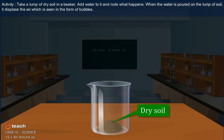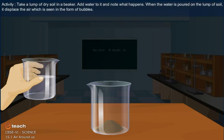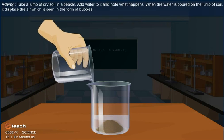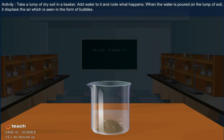Take a lump of dry soil in a beaker. Add water to it and note what happens. When the water is poured on the lump of soil, it displaces the air which is seen in the form of bubbles.